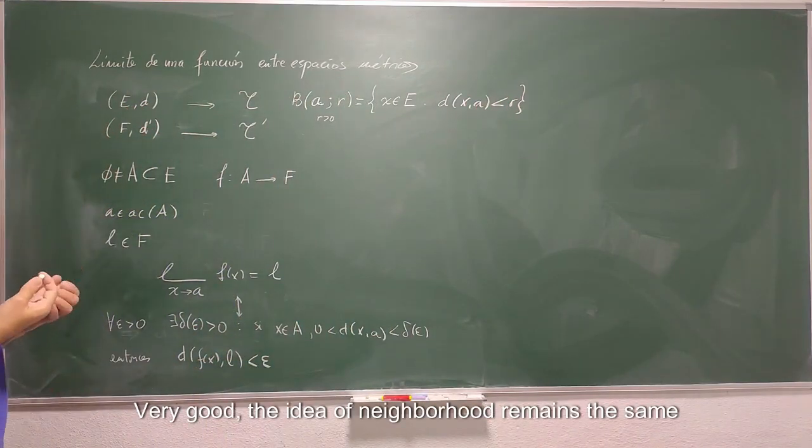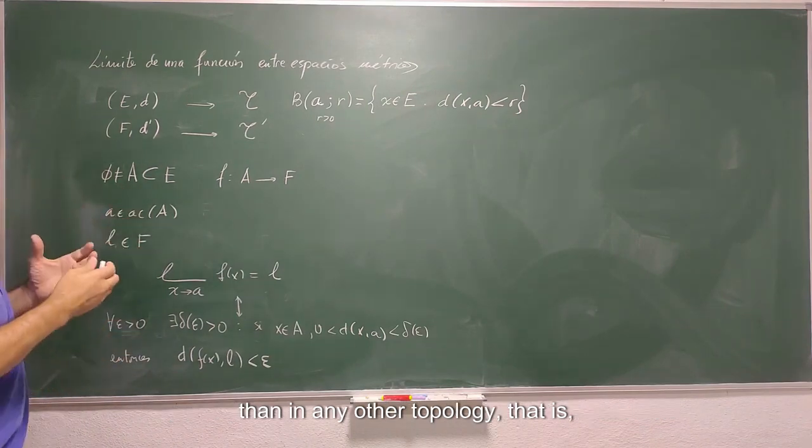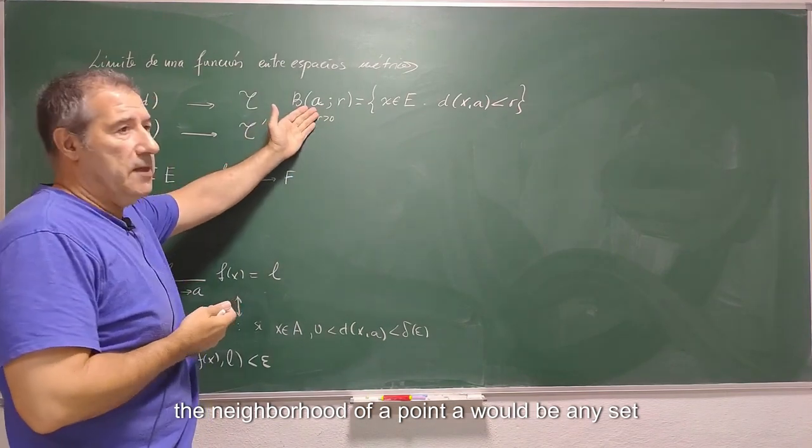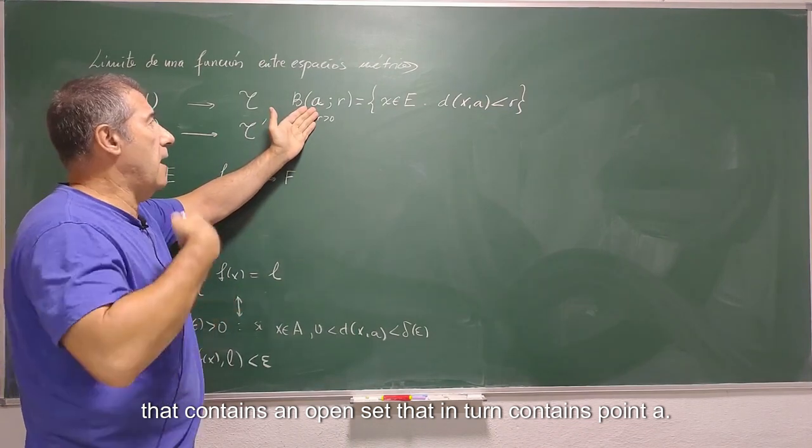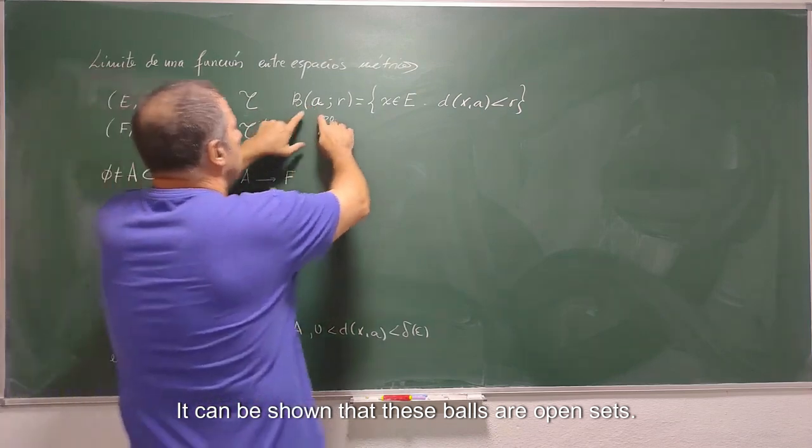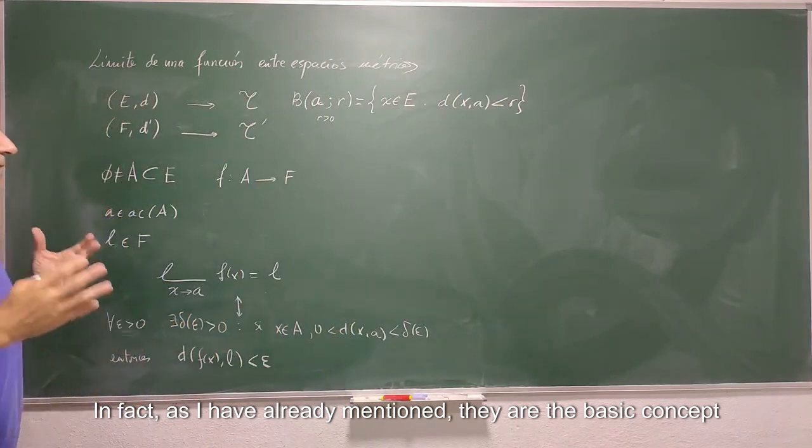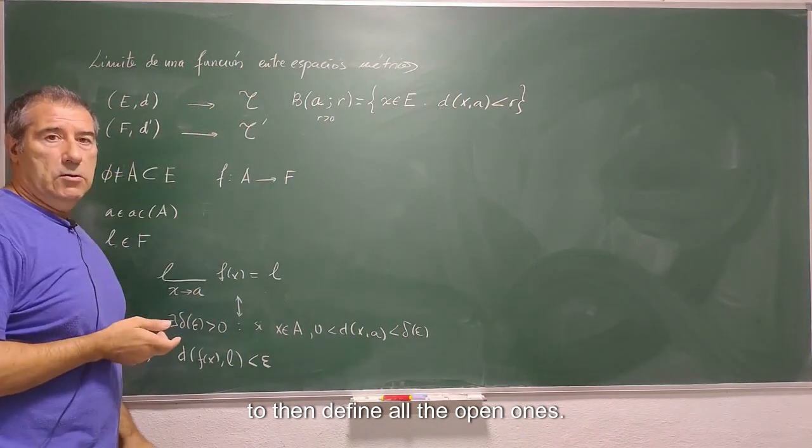Very good, the idea of neighborhood remains the same than in any other topology. That is, the neighborhood of a point a would be any set that contains an open set that in turn contains point a. It can be shown that these balls are open sets.